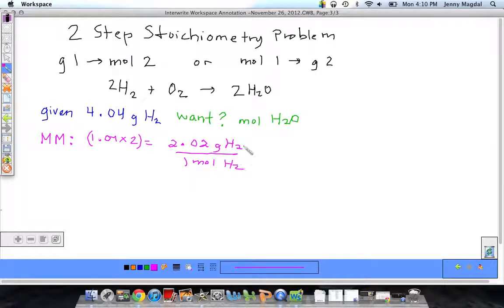So, this is the ratio that I can use, similar to the ratios that I saw before based on the balanced reaction. Now, I can start putting things together. So, I always start with my given. I have 4.04 grams of H2.